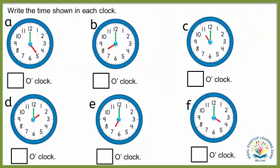5 o'clock. Let's learn about time by doing more practice. Our first activity is to write the time shown in each clock. Look at clock A — it is 5 o'clock.